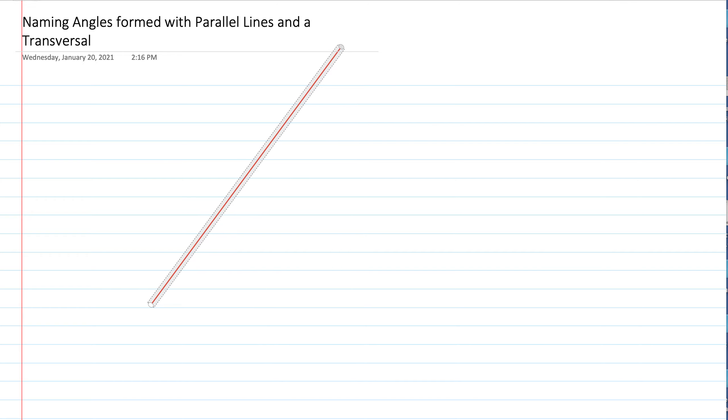We're going to recognize the patterns of parallel lines with a transversal, starting with corresponding angles, and then learn how to name the other ones by asking two questions. The names really have to do with how they behave. Using lined paper, we can see what corresponding means. Your lined paper has parallel lines, and a transversal is a line that cuts through them — the word transversal comes from Greek or Latin for 'cutting line.' The red line is cutting through the blue parallel lines.